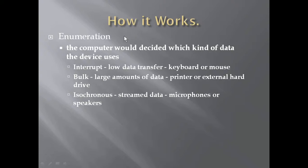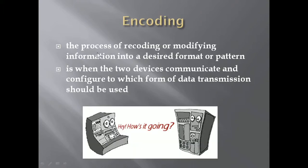So how does USB work? The computer decides which kind of data the device uses: interrupt for low data transfer like a keyboard or mouse, bulk for large amounts of data like a printer or external hard drive, or isochronous for stream data like microphones and speakers. The process of recording or modifying information into a desired format is called encoding, and when two devices communicate they configure which form of data transmission should be used.